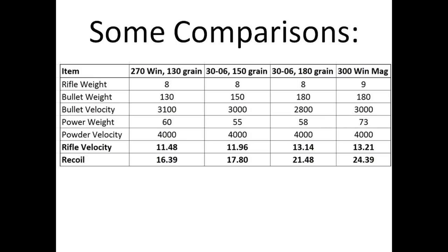If you take that 180-grain bullet and step it up to .300 Winchester Mag velocities, you're coming in at 24 to 25 foot-pounds of recoil. And if you lighten the rifle, the velocity of the rifle coming back at you is going to be that much greater, so you'll feel a heavier recoil.